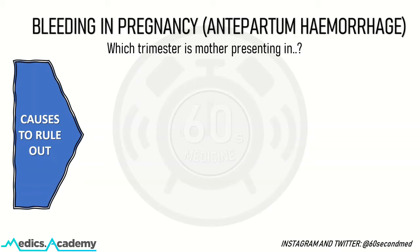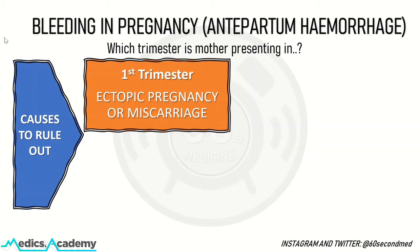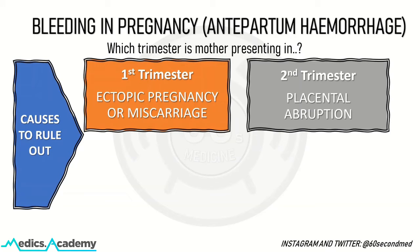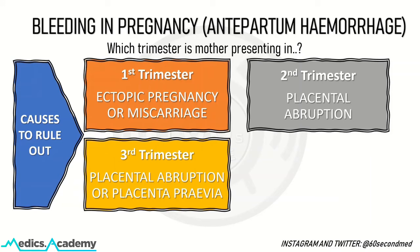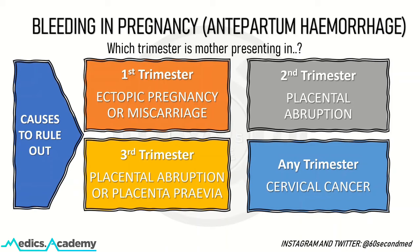For example, if a mum presents in the first trimester, you'd be thinking about an ectopic pregnancy or a miscarriage. In the second trimester, you'd be thinking more about placental abruption. In the third trimester, you'd be thinking more about placental abruption or placenta praevia. And in any trimester, you'd be wanting to rule out cervical cancer as well.